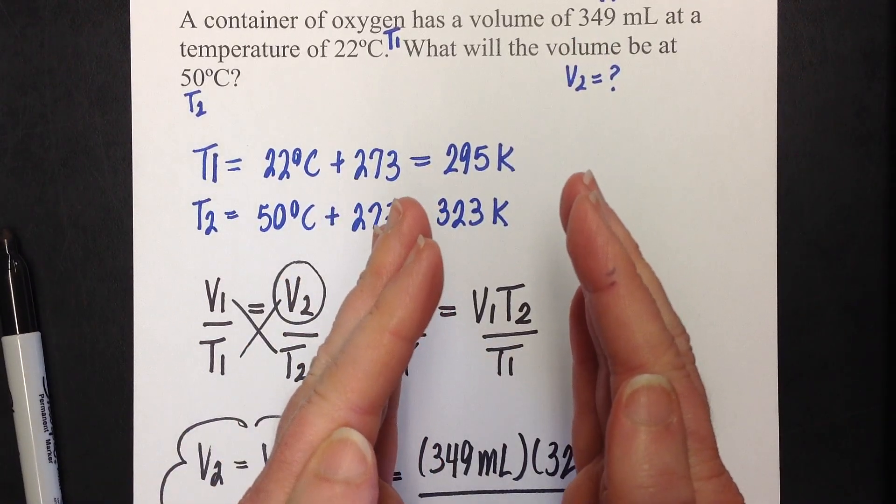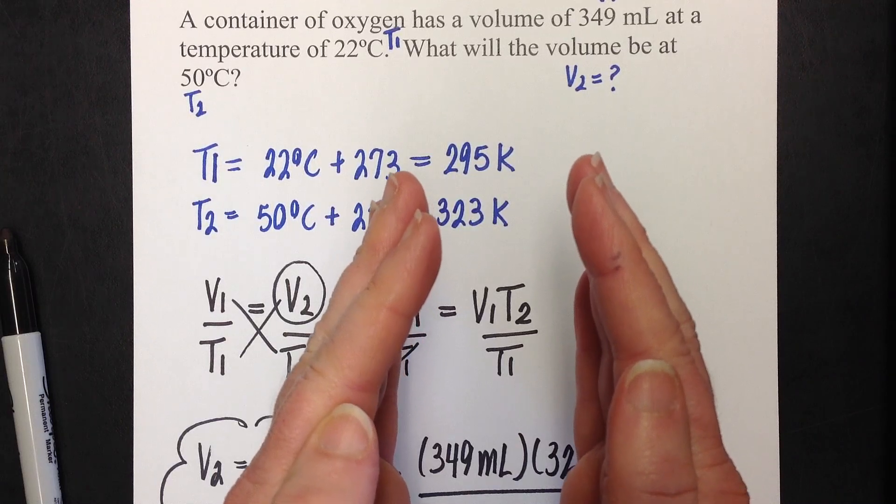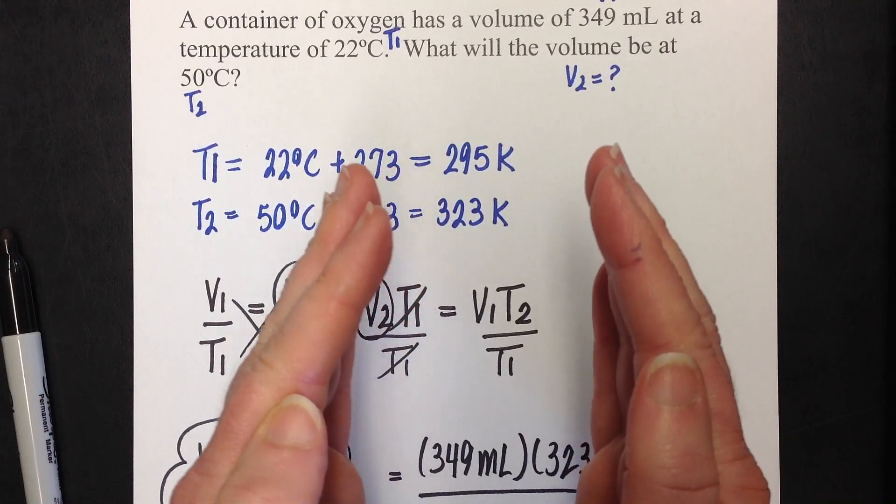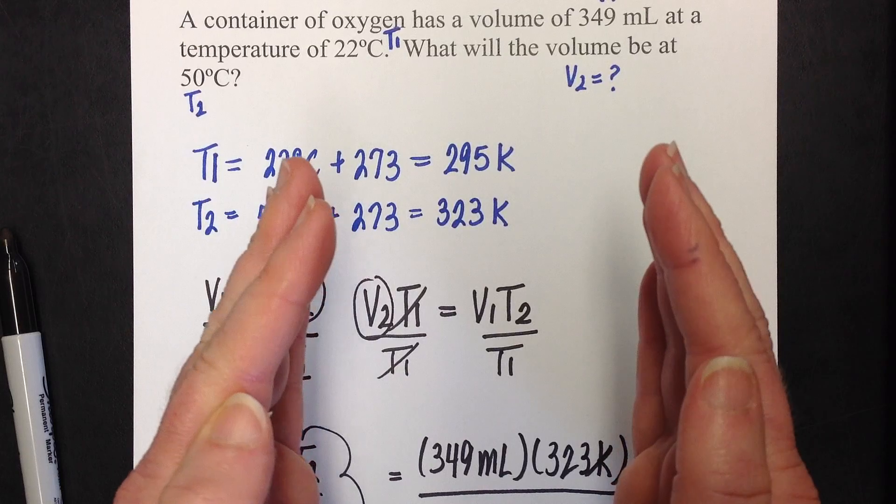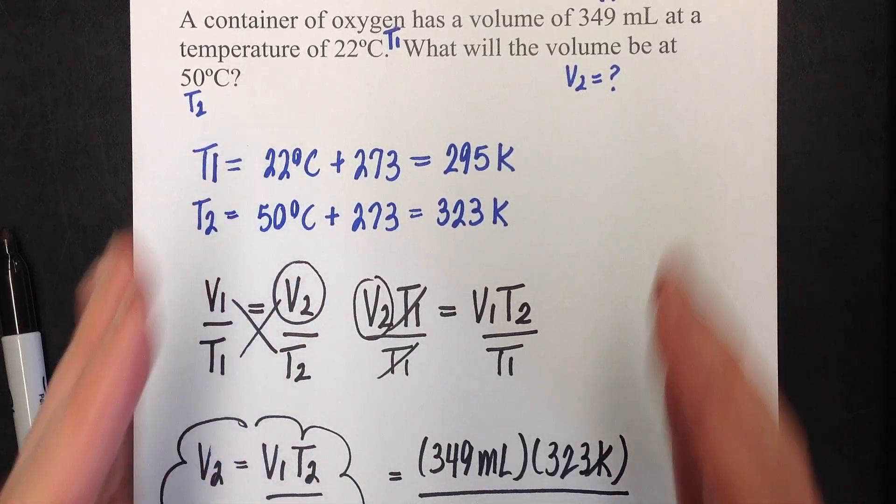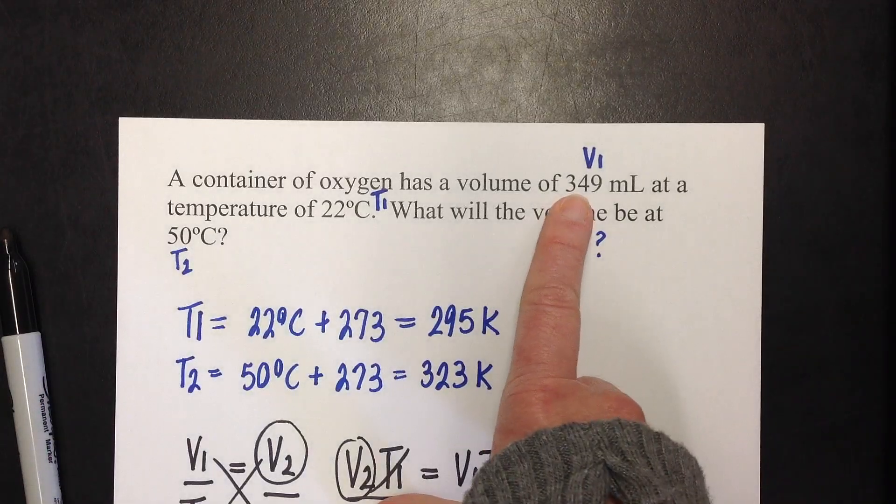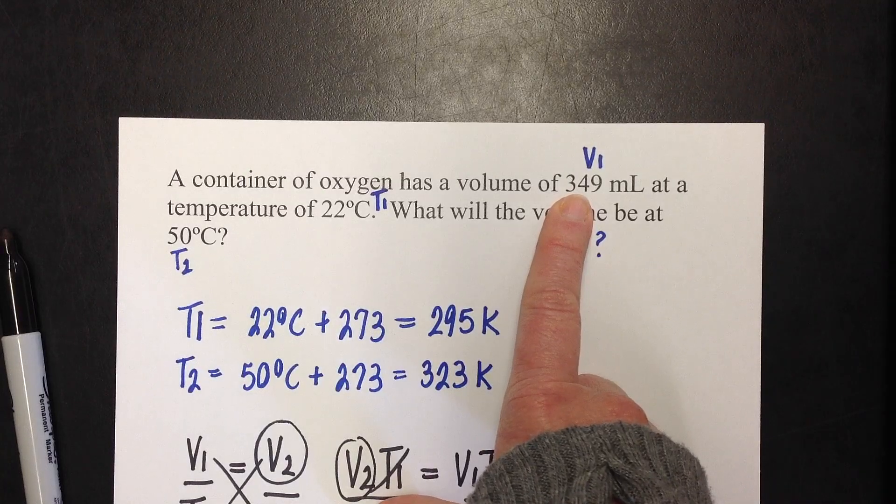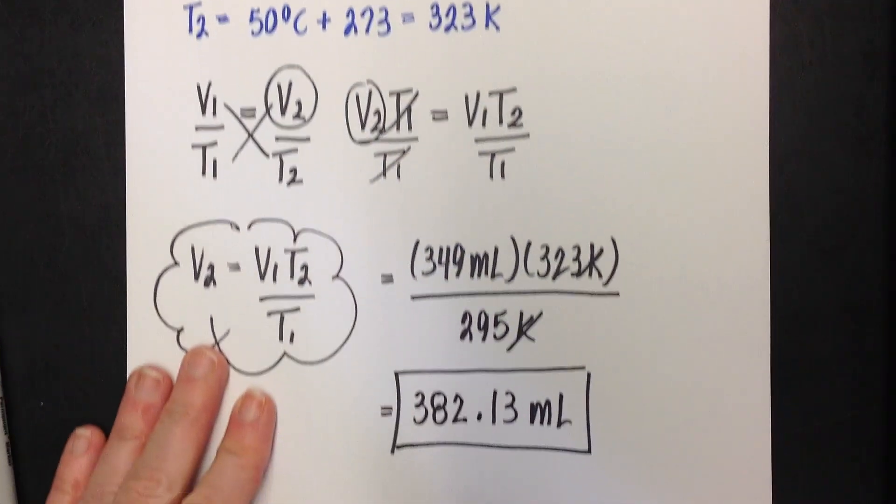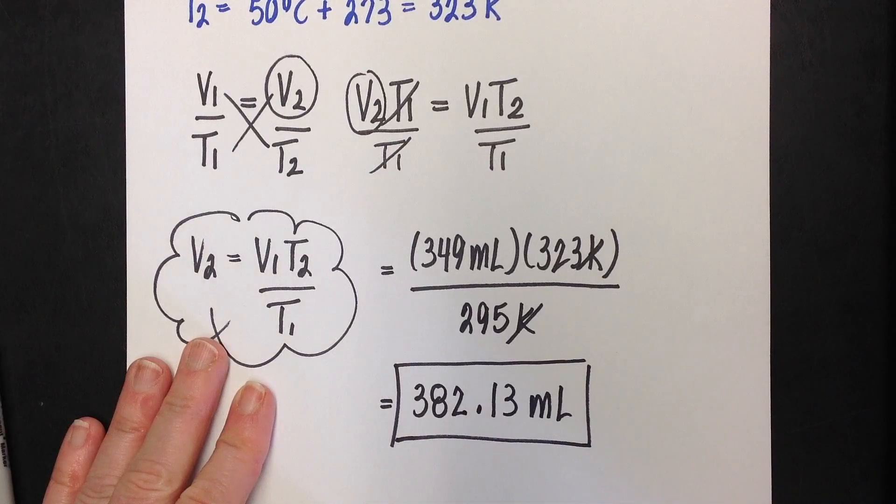We heated it up. So, it starts to heat up, and what happens when you heat up a gas to the volume? The pressure starts, I'm sorry, the volume starts increasing. So, I should have a volume larger than 349 milliliters, and indeed, I do. It went up to 382.